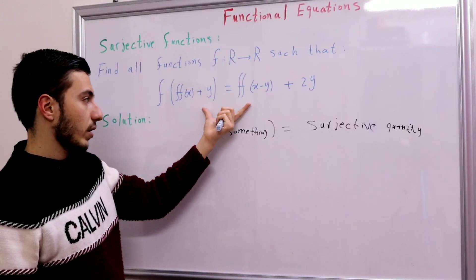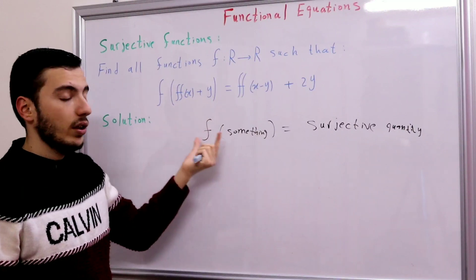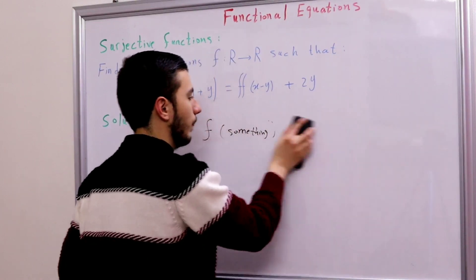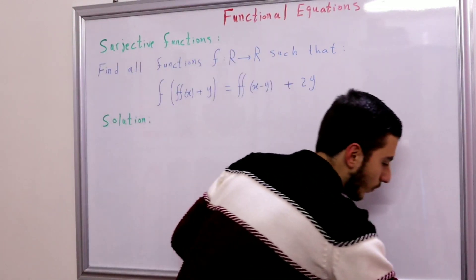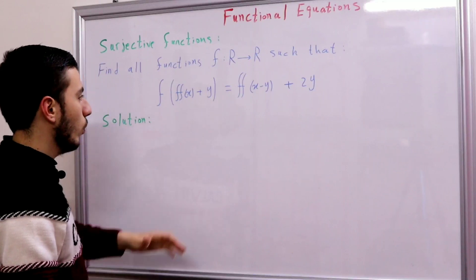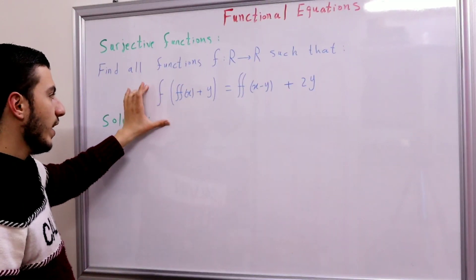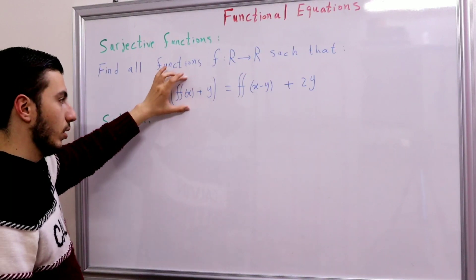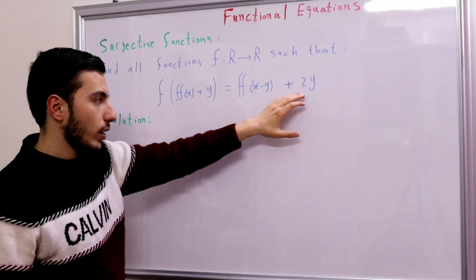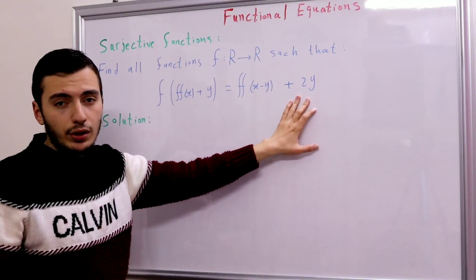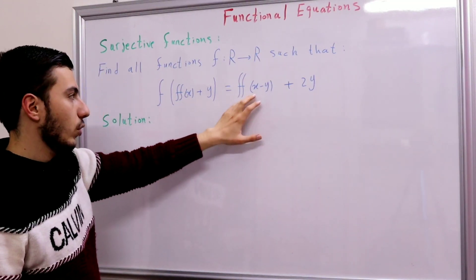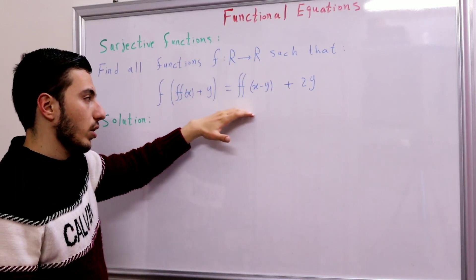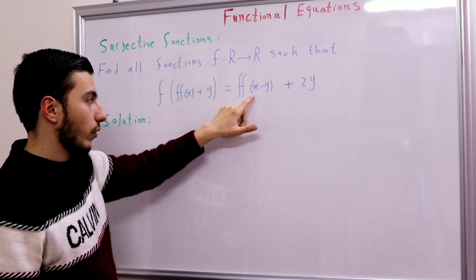So can we prove this function f is subjective? Let's check. On the left-hand side we already have f of something — that's good. But what about the right-hand side? Well, 2y is indeed subjective, that's good. What about f(f(x−y))? We can't say that this quantity is subjective because we have f(f(x−y)).